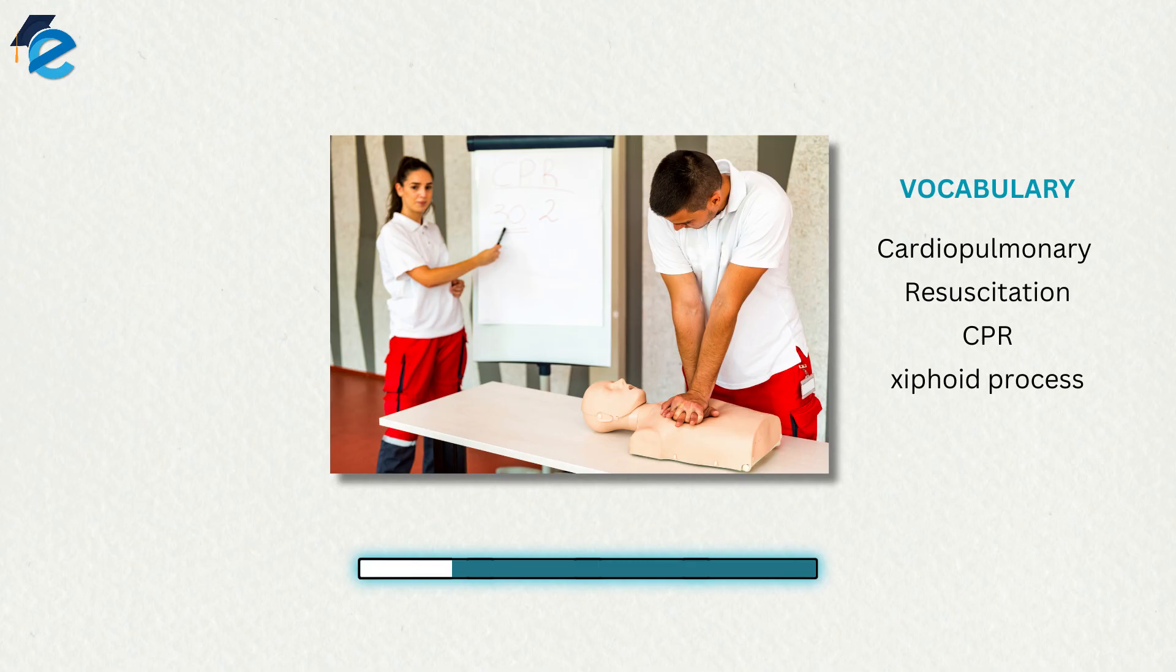By applying pressure with the flat portion of one hand on the sternum, it is possible to manually compress the blood within the heart enough to push some of the blood within it into the major arteries. This is particularly critical for the brain, as irreversible damage and death of neurons occur within minutes of loss of blood flow.